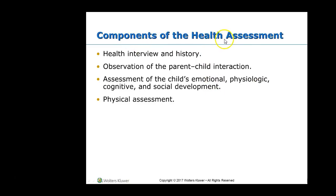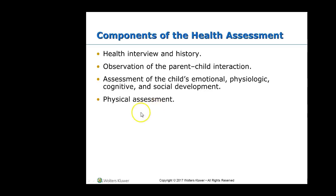When we assess a child, there are similarities between children and adults, but you also have to include the parents when you're assessing a child. There are some extra steps and extra questions you need to ask when getting a health history and doing an assessment. One key thing you'll notice is the observation of the parent-child interaction — how do the parents and children interact with each other? Do the parents get angry easily? Are the children not disciplined well? Those are the kinds of things you want to make note of when assessing kids.